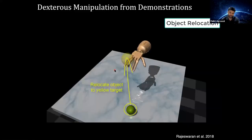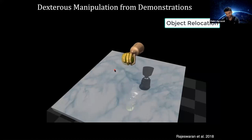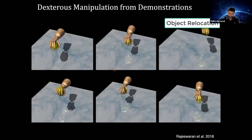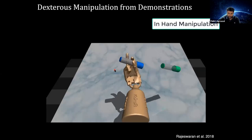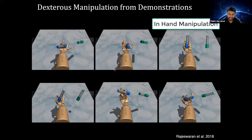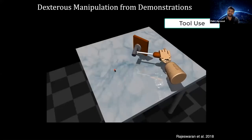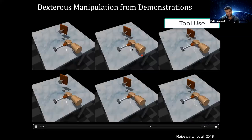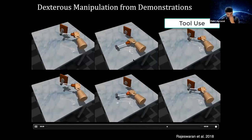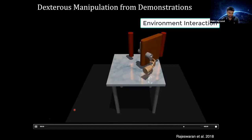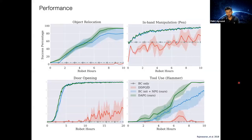We can start with a high value of w, because we want to trust the demonstrations more initially, and then decay it to a small value eventually. This method was used for dexterous manipulation tasks — for example, relocating an object and tool-use tasks, which are quite hard to solve by RL from scratch because exploration is challenging. For example, to lift a hammer and hammer something, you require a large number of actions that need to happen in sync.